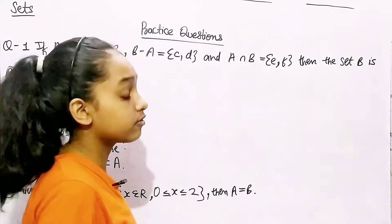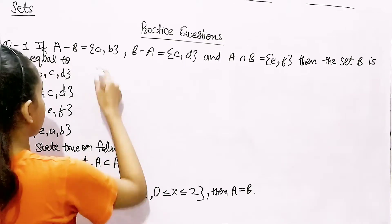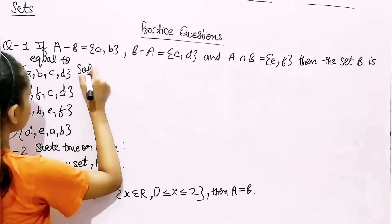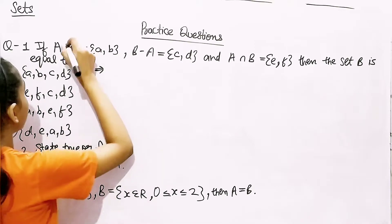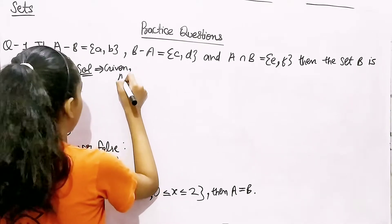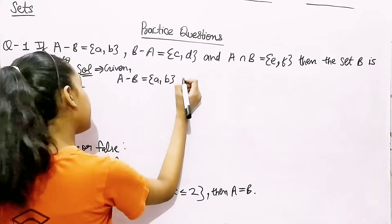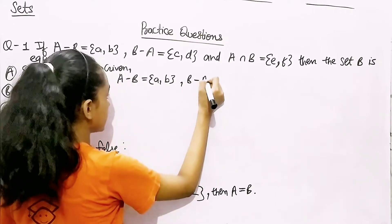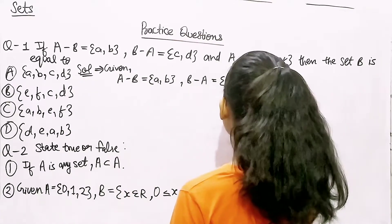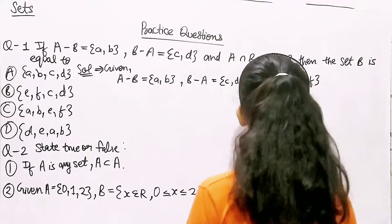Let me write the given information once again. Given: A minus B = {a, b}, B minus A = {c, d}, and A intersection B = {e, f}.